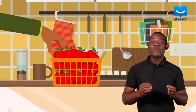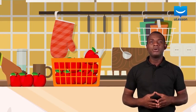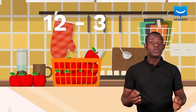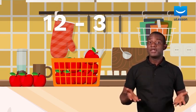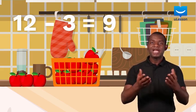Let's talk about subtraction. We subtract when we need to remove a number of items from a total number. Say we had 12 apples in a bowl and someone removes 3 apples from the bowl. How many apples would be left in the bowl? You need to subtract 3 from 12 in order to know the number of apples remaining. Therefore, 9 apples are left in the bowl.